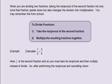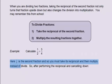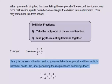For example, calculate 1/2 divided by 3/4. Here, 3/4 is the second fraction, so you must take its reciprocal and then multiply instead of divide. After performing the reciprocal and cancelling down: 1/2 divided by 3/4 equals 1/2 multiplied by 4/3 — where 4/3 is the reciprocal of 3/4 and we have changed division to multiplication. This equals 1 multiplied by 4 divided by 2 multiplied by 3. As 4 equals 2 multiplied by 2, there is a 2 in both numerator and denominator which can be cancelled, giving the answer 2/3.